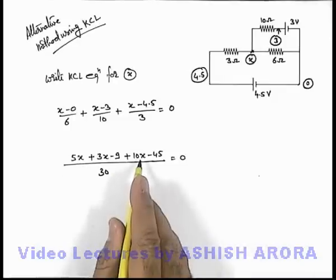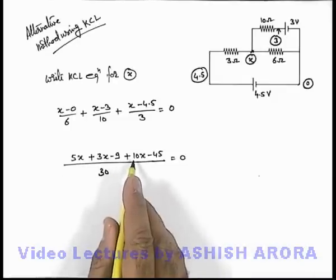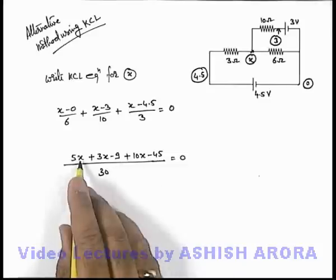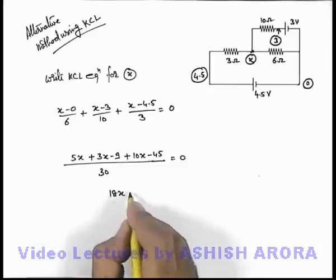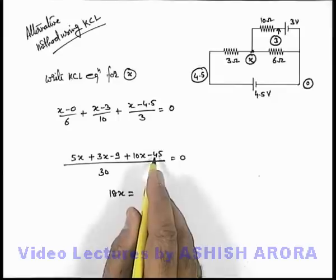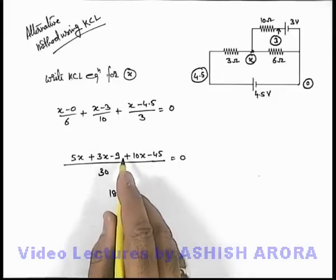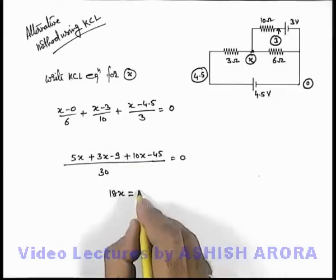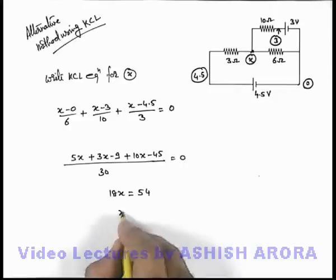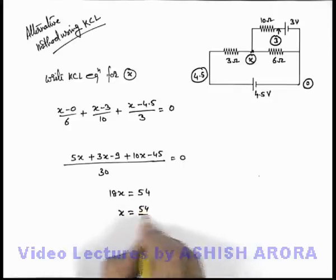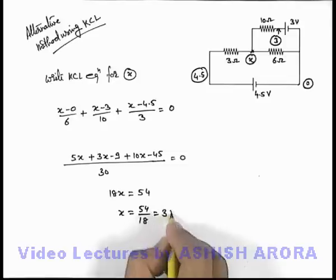And on further simplifying here we are getting this will be 10 plus 5, 18x is equal to 45 plus 9, and this 45 plus 9 will be equal to 54. That implies the value of x is 54 by 18 that is 3 volt.